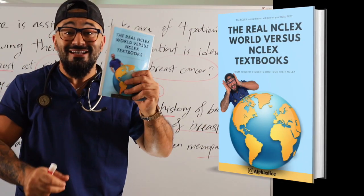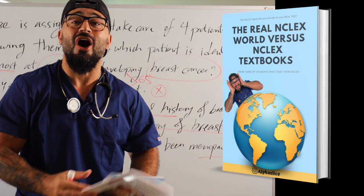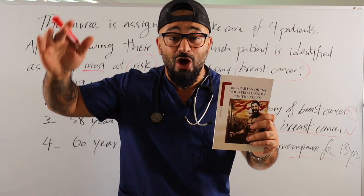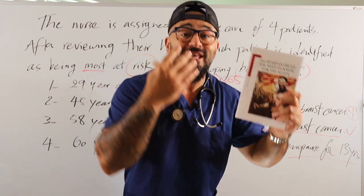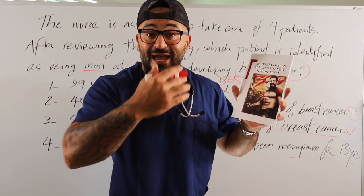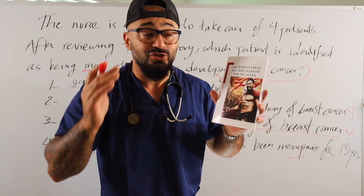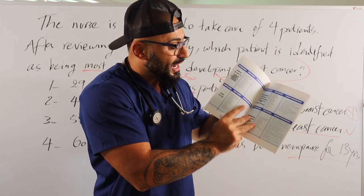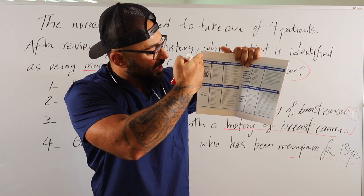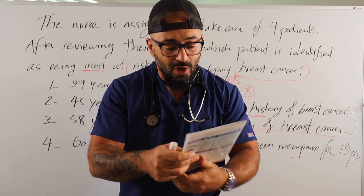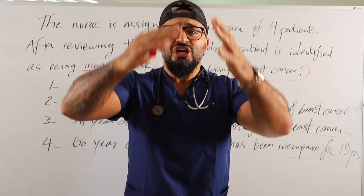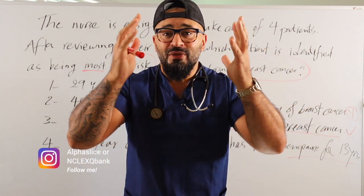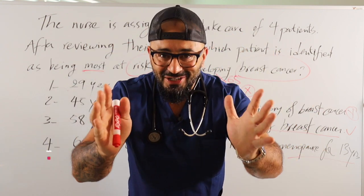That's the end of the video. If you want the ebook, click the link in the description box. I'm also going to offer you the 300 Spartan Medication e-booklet. When our students go to the test center, they also text me the drugs they got on their test — medication calculation questions. Over the past 12 months, me and Professor Anthony Burke collected 300 of those drugs and put them all in an ebook with family categories. Every drug has indication, side effects, and patient teaching. Share this video, tag me at Alpha Slicer, and check out NCLEX QBank on Instagram.